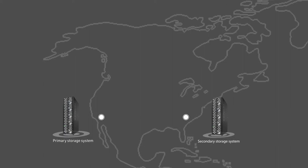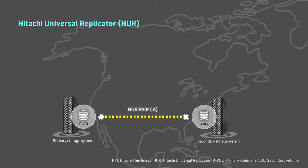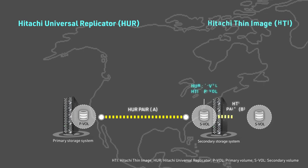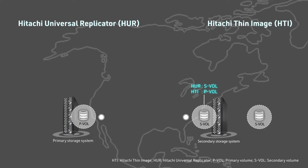Here's how you can manage a Thin Image pair in this configuration. You can create the Thin Image pair at any time after the Universal Replicator pair has been created. You can delete the Thin Image pair and its associated snapshot data at any time. If you want to restore the Thin Image pair, you must first delete the Universal Replicator pair.